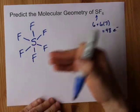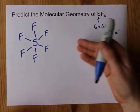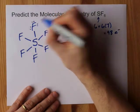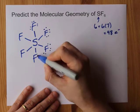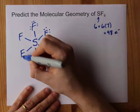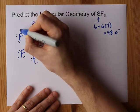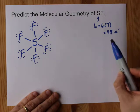Then I complete the octet on all the outer atoms, counting from 12, 14, 16, 18, all the way up to 46, 48. I stop once I get to the number here.